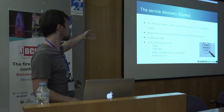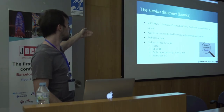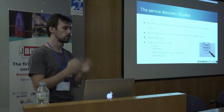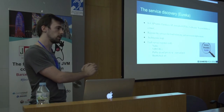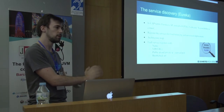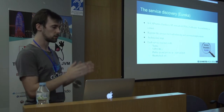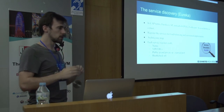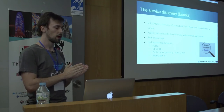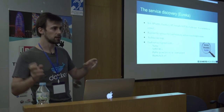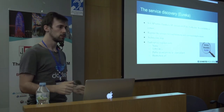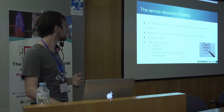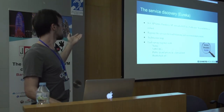Each service will register to Eureka automatically, for load balancing and automated deployments, and it will register with parameters — there are a lot more but these are the basic ones. There's a name for the service so you can find it in the dashboard. There's a VIP, which is like a URL, so if you want to call from one service to another, you just use this VIP. You will ask Eureka to give you all the instances with this VIP, and then you will load balance.